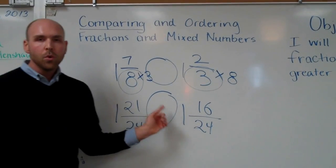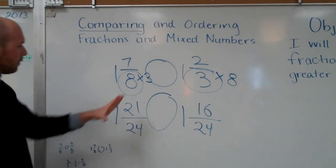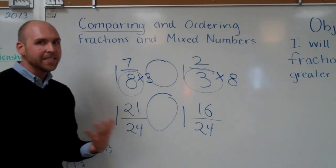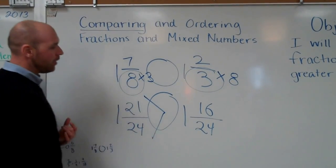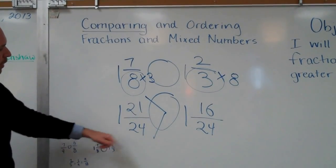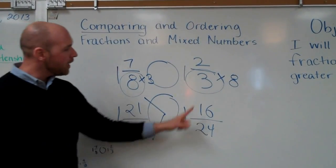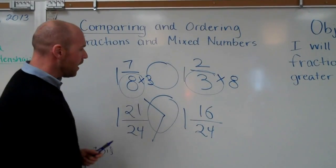Alright. Now, take a look. One and twenty-one twenty-fourths and one and sixteen twenty-fourths. It should be obvious now which one is greater or less than. So remember your alligator mouth is going to eat the bigger one. So one and twenty-one twenty-fourths is greater than one and sixteen twenty-fourths.